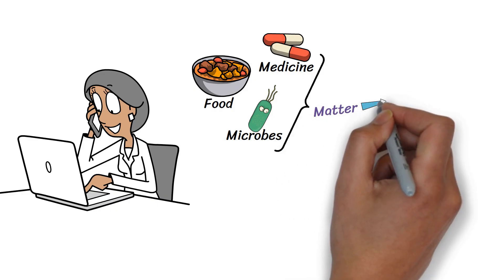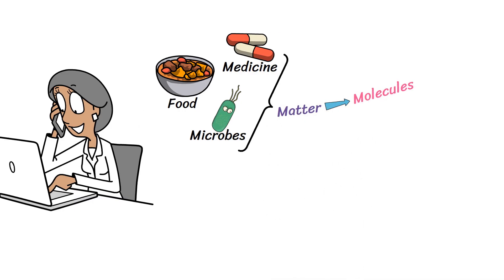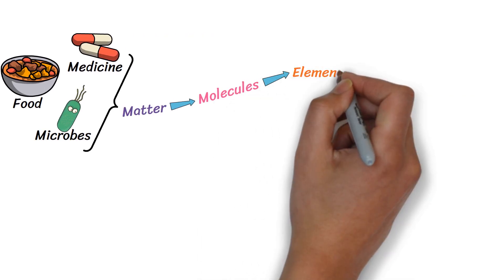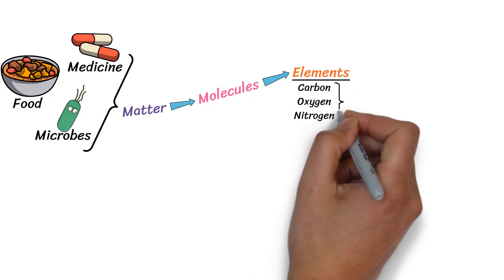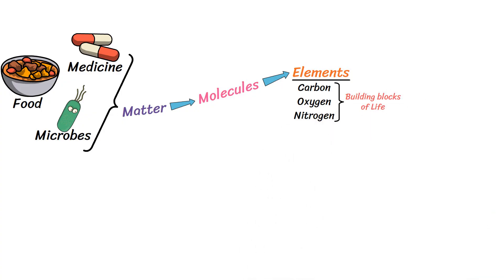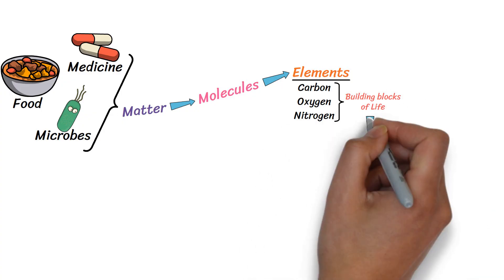Matter is composed of several molecules, and every molecule is made up of elements. These elements, like carbon, oxygen, and nitrogen, are the building blocks of life, and they're made up of even smaller units called atoms.